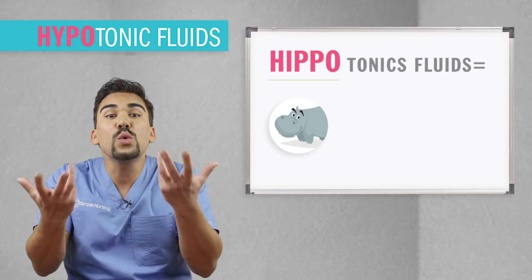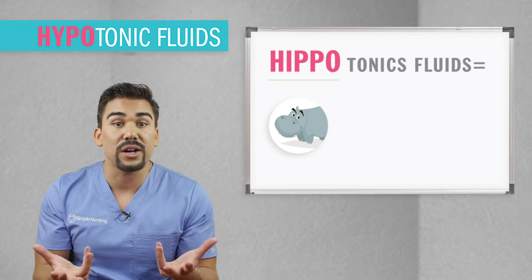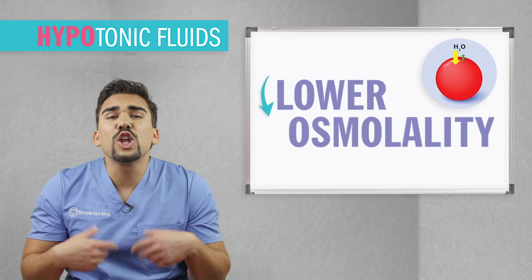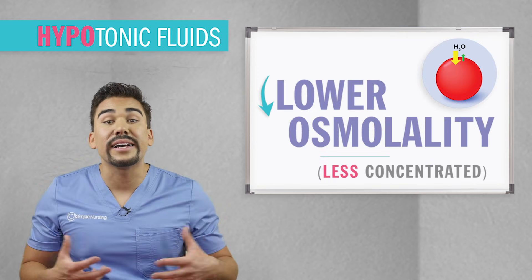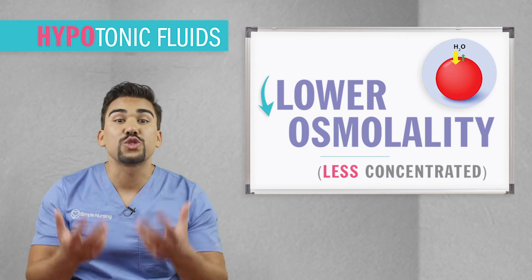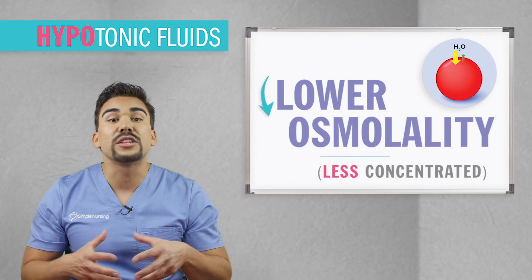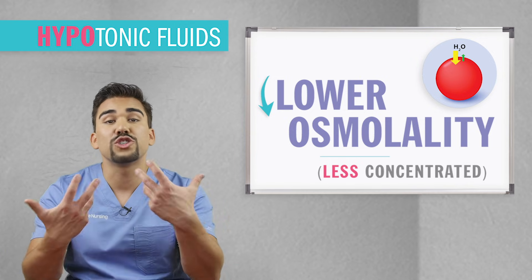They are basically diluted fluids having less salt and more water than your body fluids. The simplest way to remember this is hippos love water, and hypotonic fluids are filled with water. Hypotonic fluids have a lower osmolality — basically a less concentration than body fluids — because all that water dilutes their concentration.